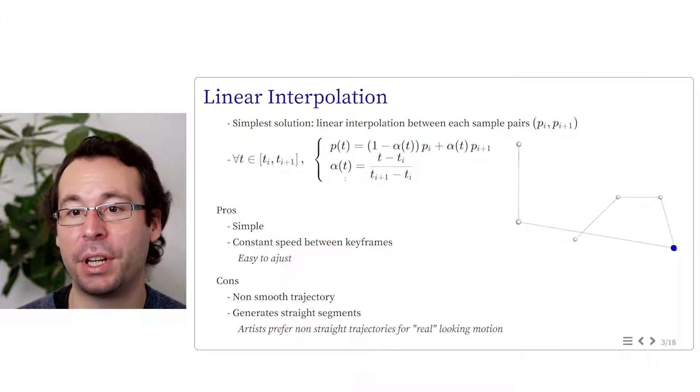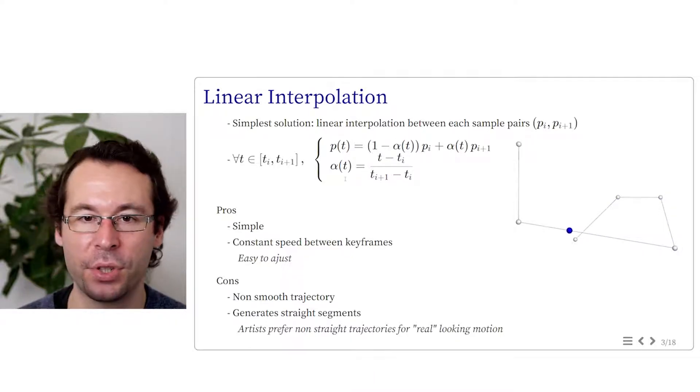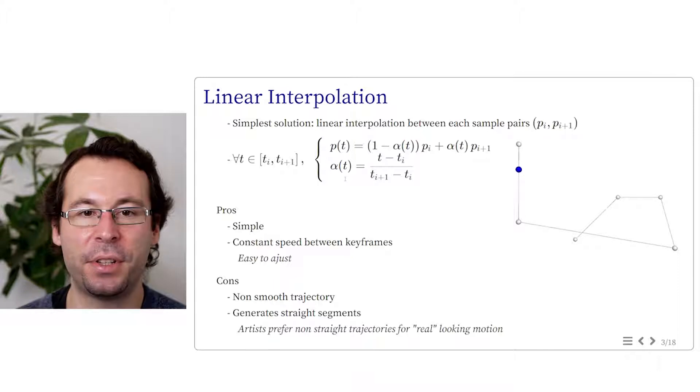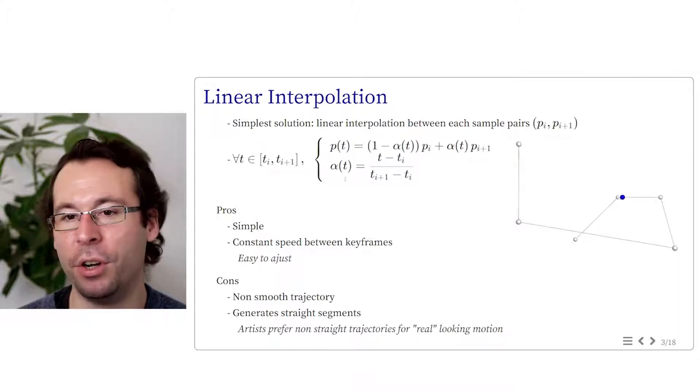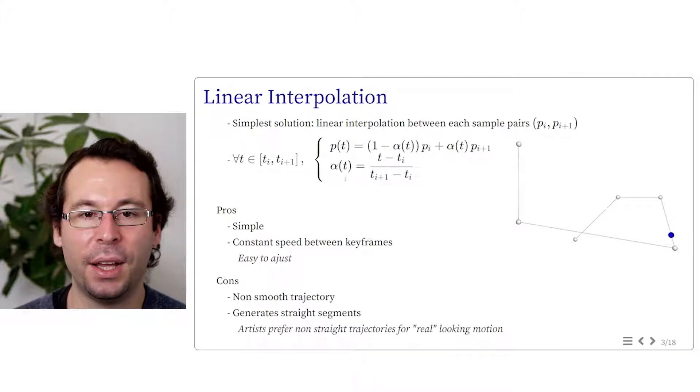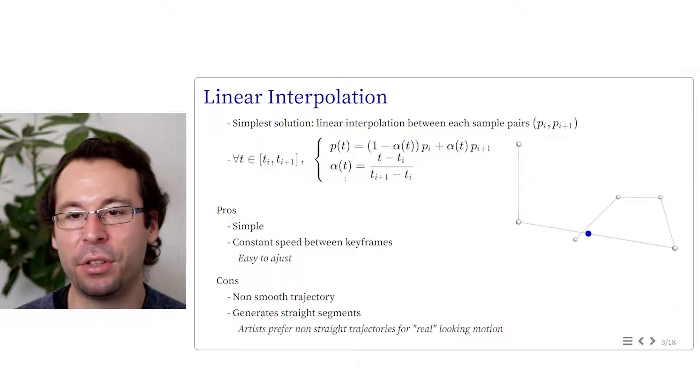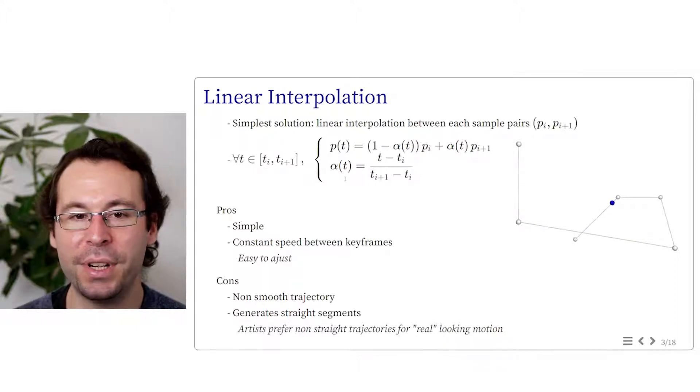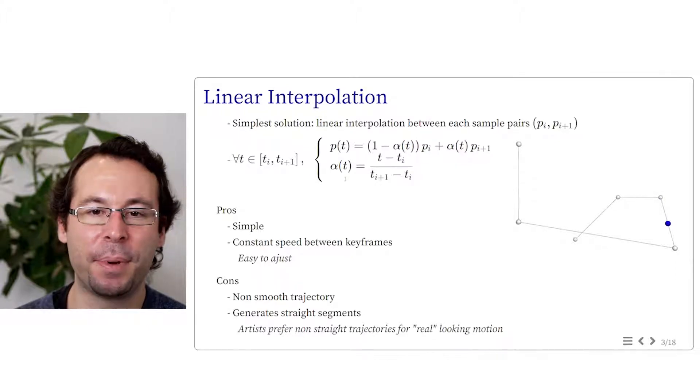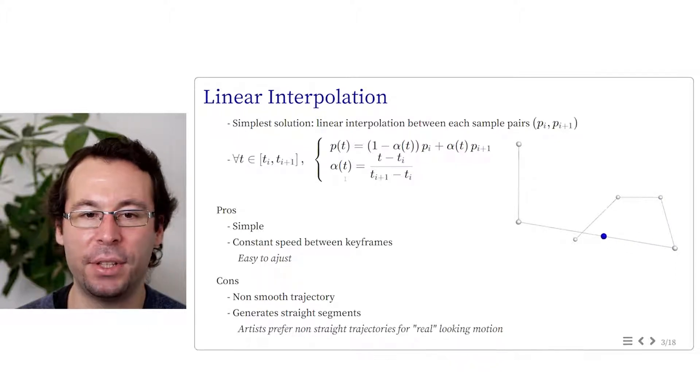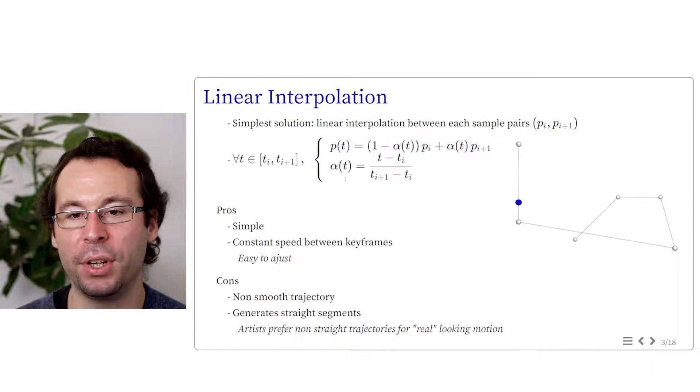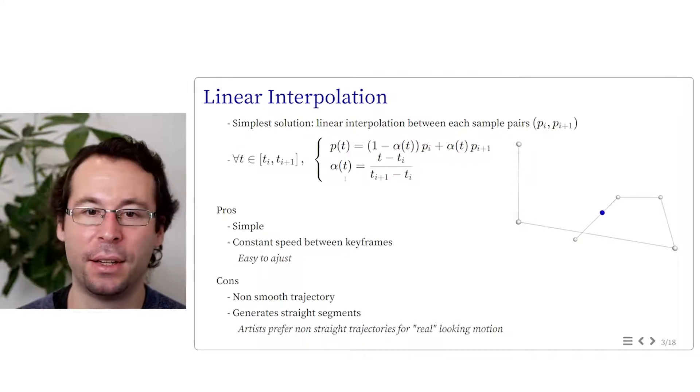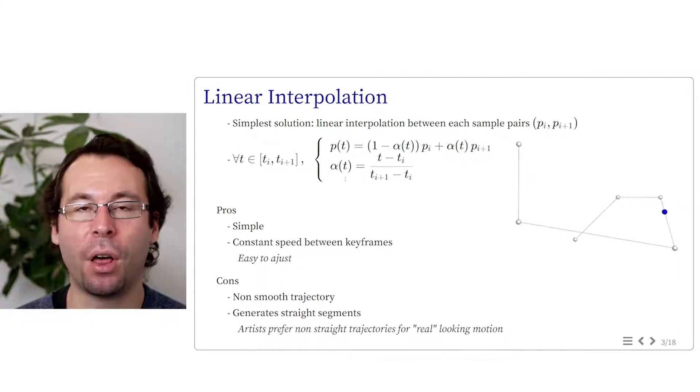The main drawback is that the trajectory is not globally smooth. At every sample, there is a discontinuity of tangent or jump of velocity. Also, it automatically generates straight segments by definition. And we will see that artists usually prefer non-straight trajectories for real-looking motion and even simple ones. So what are our other options?